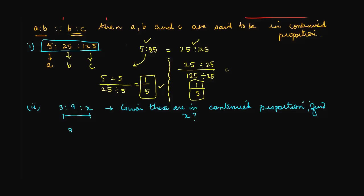That basically means that 3 upon 9, or rather let me not go straight to this. Then 3 is to 9 should be equal to 9 is to X. Or, in other words, 3 upon 9 is equal to 9 upon X.